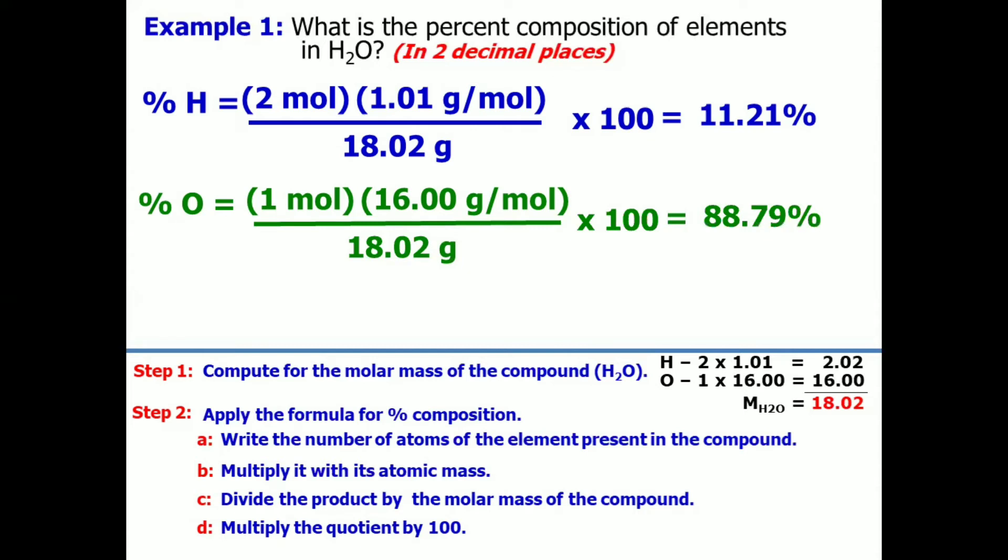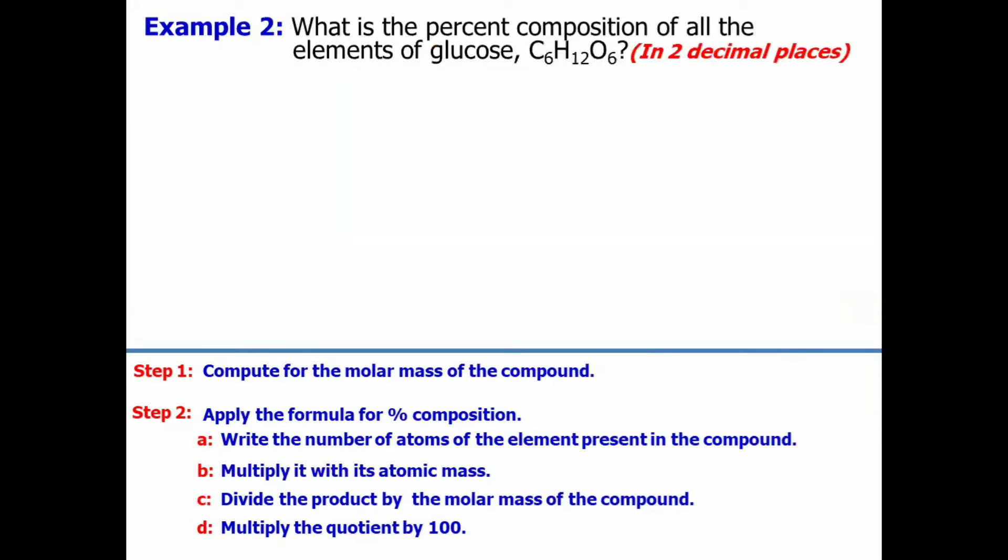And when we add the percentage of hydrogen and oxygen, our result is 100%. So, the total composition should be equal to 100%. To further understand this, let's proceed to example number 2. This time, we will compute for the percent composition of all the elements of glucose. And the formula for glucose is C6H12O6.